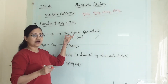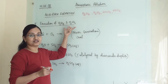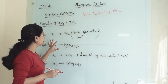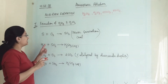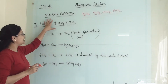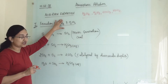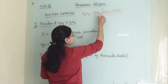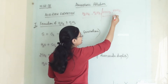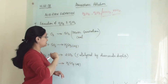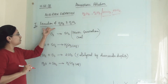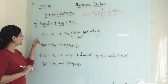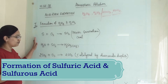Now we will see how these traces of acid are formed via atmospheric pollutants. There are two steps in this process. In the first step we will see the formation of sulfuric acid and sulfurous acid. In the second step we will see the formation of nitric acid and nitrous acid.